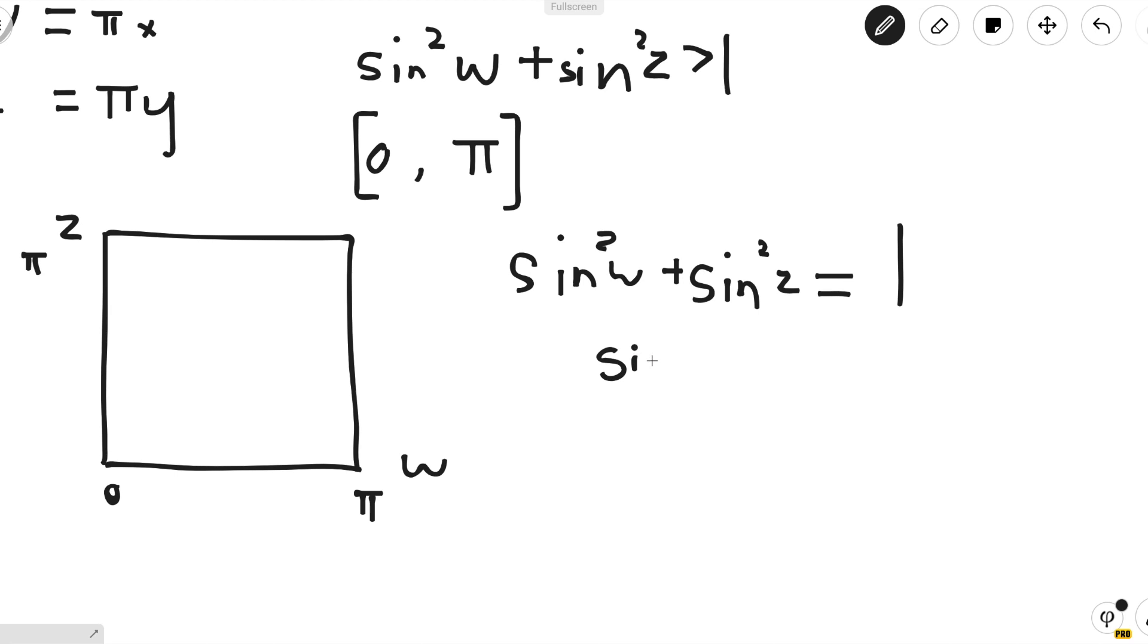We can move w to the other side to get sin²z = 1 - sin²w. And we can use our trigonometric identity that sin²w + cos²w = 1 to find that sin²z = cos²w.